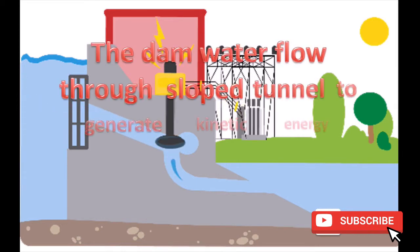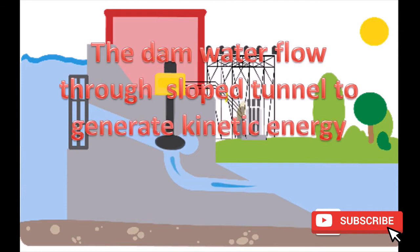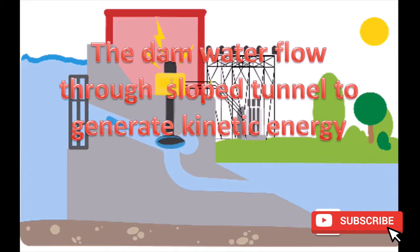The dam water flows through a sluice tunnel to generate kinetic energy. The potential energy of the dam water is converted into kinetic energy.